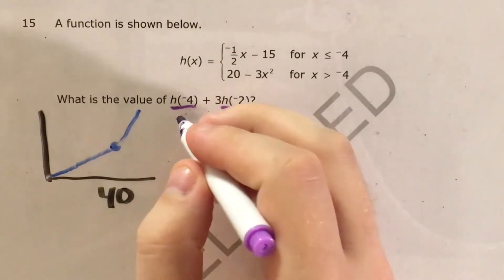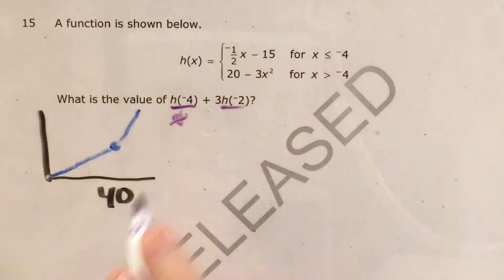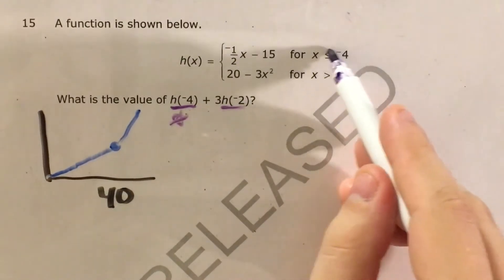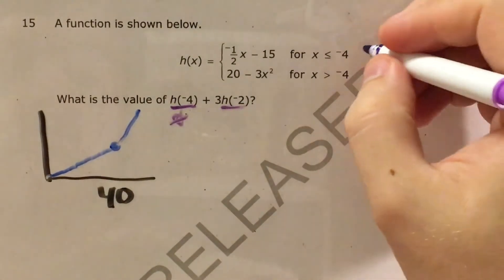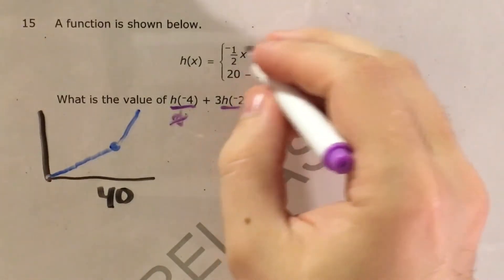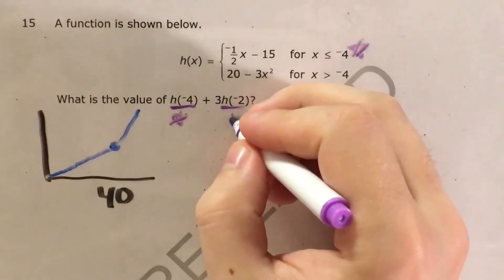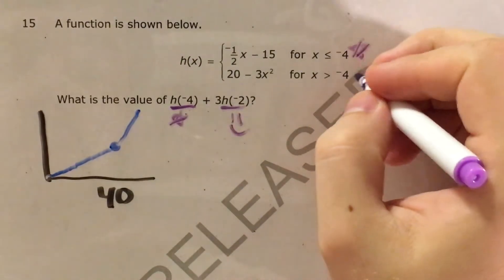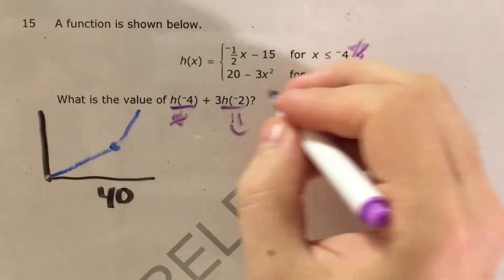So h of negative 4. So if my x is negative 4, negative 4 is not greater than itself. It would fall in the less than or equal to negative 4 range. So I would plug negative 4 into this one. And then h of negative 2. Negative 2 is greater than negative 4, so I would plug negative 2 into this one.